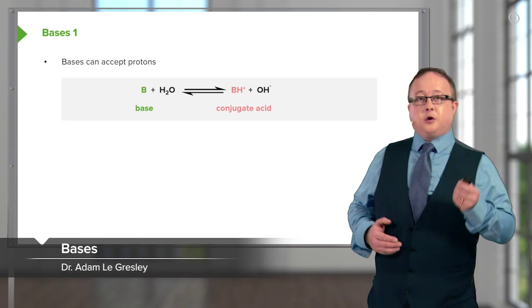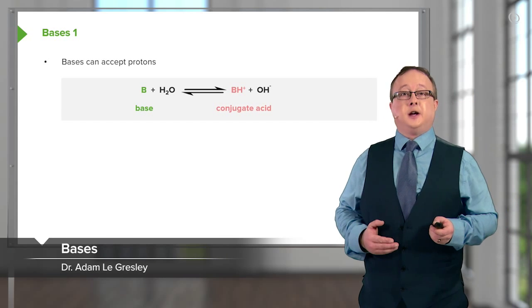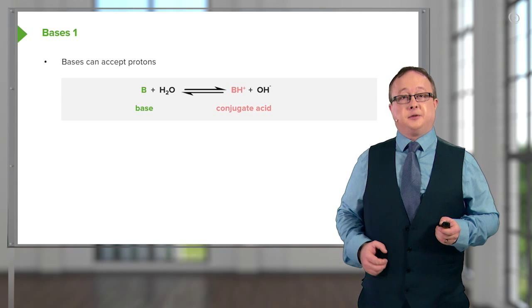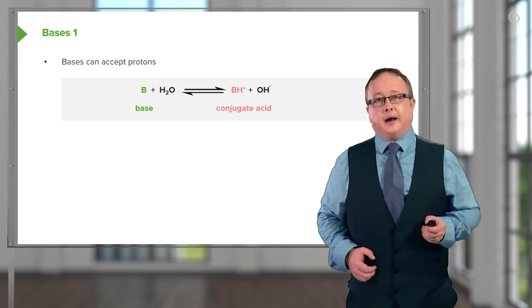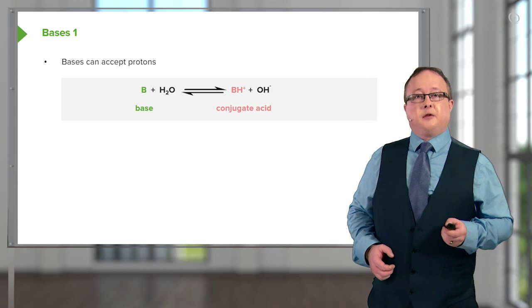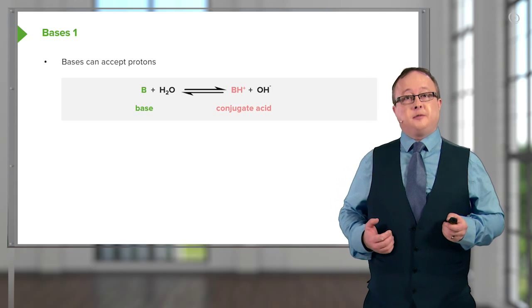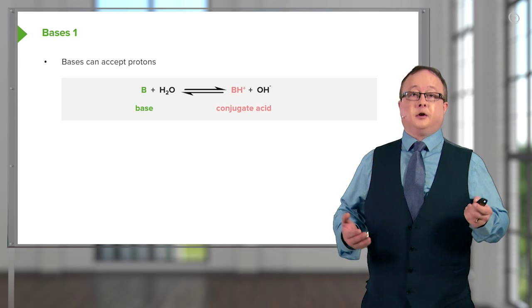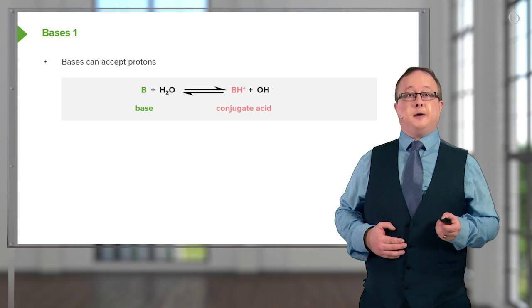Let's get on to bases. So we've talked about acids, we've talked about the dissociation of acids into conjugate base and H+. Now let's talk about bases. There are a number of different bases - these can be charged bases such as hydroxide, or uncharged bases like ammonia and amine derivatives.